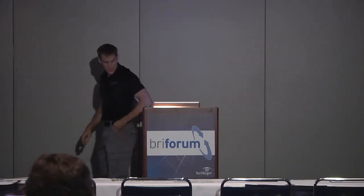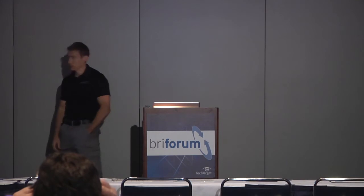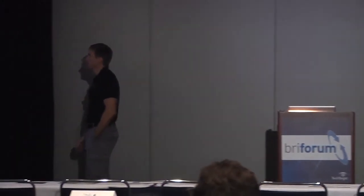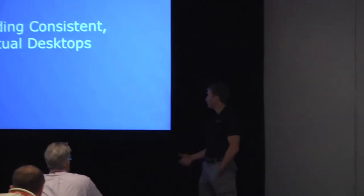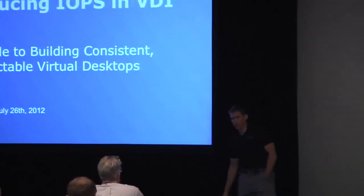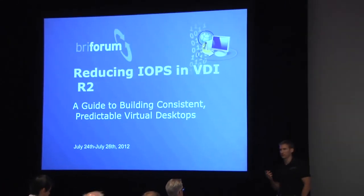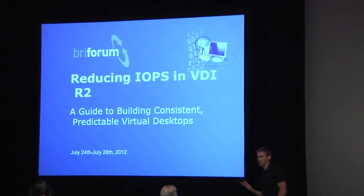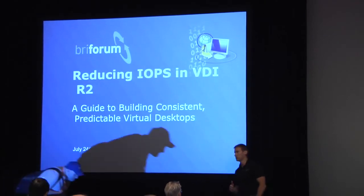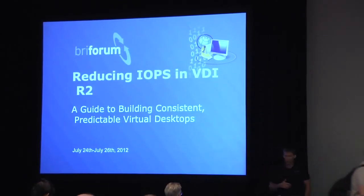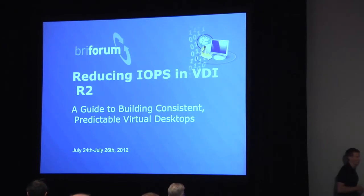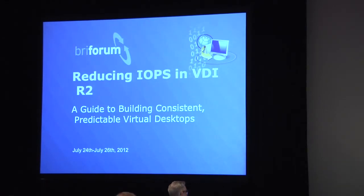We're going to go ahead and get started today. Our topic is reducing IOPS in VDI, basically how to build predictable desktops. How many people are struggling with IOPS-related issues, application slowdowns, and so forth? I also want to teach you how to measure these IOPS and give you a little bit of an update on where I think storage is going and some of the new players in the market.